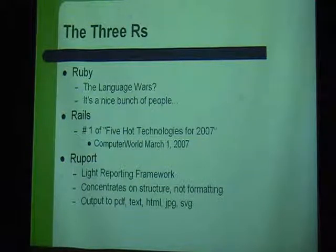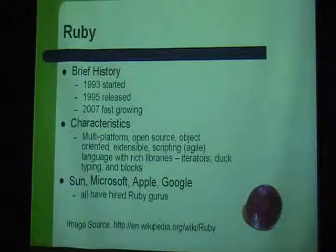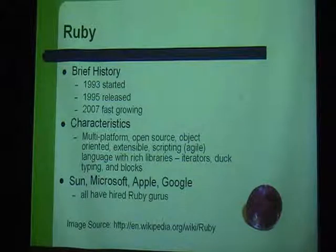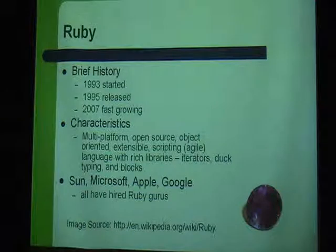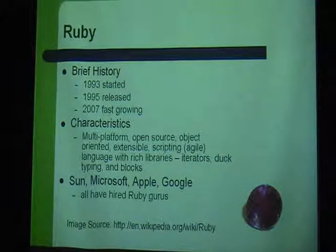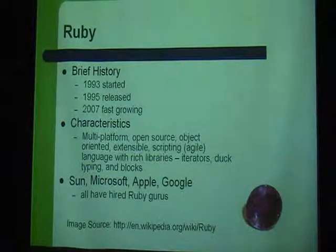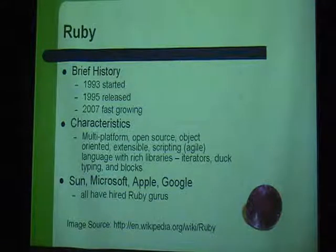We're not going to get into any language wars here. Ruby started in 1993, and the first release was in 1995. There's a very creative, energetic guy who goes by the name of Mats in Japan, who's the principal architect — a language genius. There hasn't been a major release of Ruby for about a year now. One is expected at the end of this year and it's going to do some very interesting stuff.